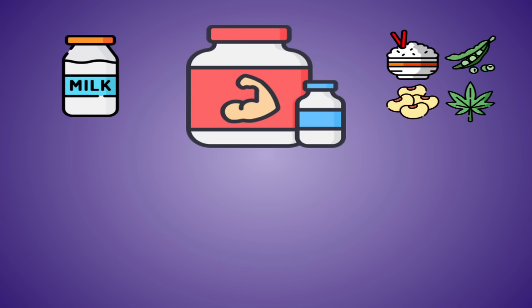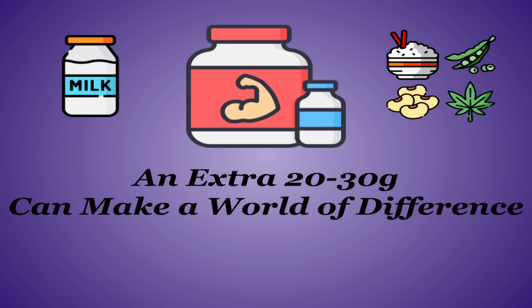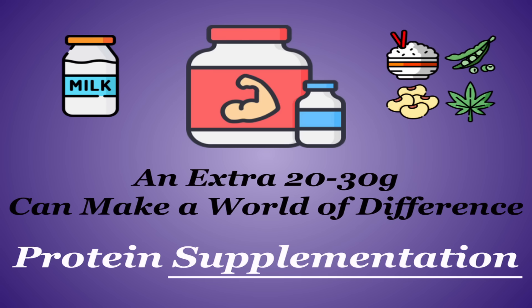Protein supplementation is very common and for good reason. For many people, hitting that raw number goal can be very difficult, and an extra 20 to 30 grams can make a world of difference. But protein supplementation is called that for a reason. It should not be your primary source of protein over actual food.